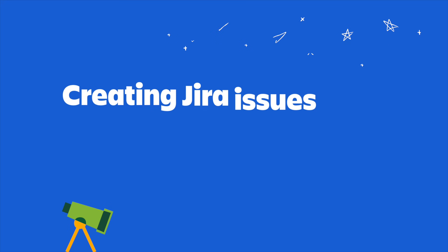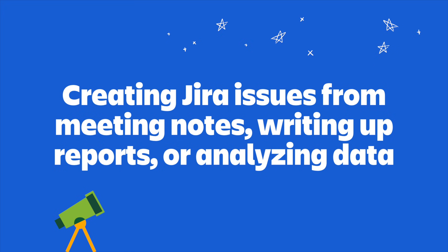Finally, we have Rovo Studio. This is where you can create agents and automations that fit your team's needs. Agents are like an AI teammate that takes care of tasks for you, like making Jira issues from meeting notes, writing up reports, or analyzing data. If you're big on customization, you can make your own agents with simple tools that don't require any code, or you can use ready-made agents like Decision Director or Work Item Planner.